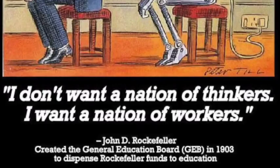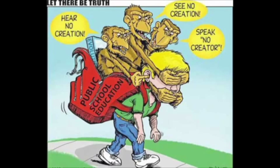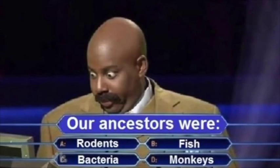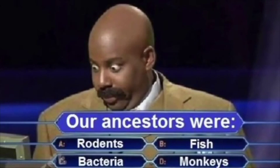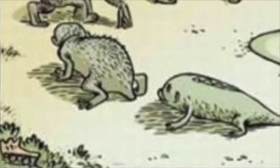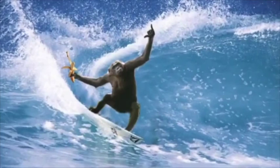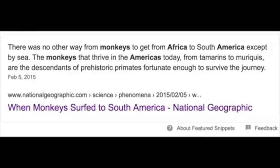Let's talk for a minute about what the religion of evolutionism indoctrinates people to believe. We all know the basics — that it teaches everyone is related to squirrels, chipmunks, peaches, and pond scum. But it goes much deeper than that. Besides the famous tree of lies that is being uprooted as we speak, they also teach that after bacteria eventually evolved into fish that later evolved into monkeys, that these monkeys next surfed from Africa to America. That is how monkeys got to South America — they surfed there.